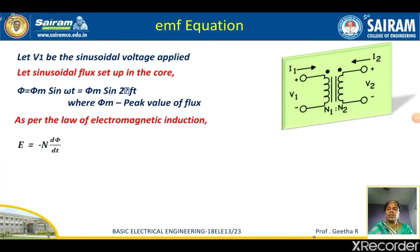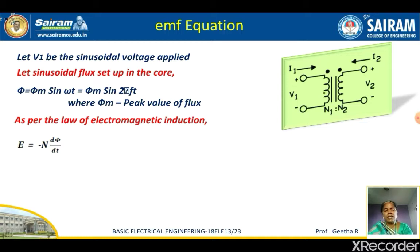Good morning. In the continuation of the previous lecture, we are going to learn about finding the expression for the EMF induced in the transformer. You know the symbol of the transformer — primary winding and secondary winding. Let V1 be the applied voltage, V2 be the output voltage, and I1 and I2 are the input and output currents. Let N1 be the number of turns in the primary and N2 be the number of turns in the secondary. Let V1 be the sinusoidal voltage applied.